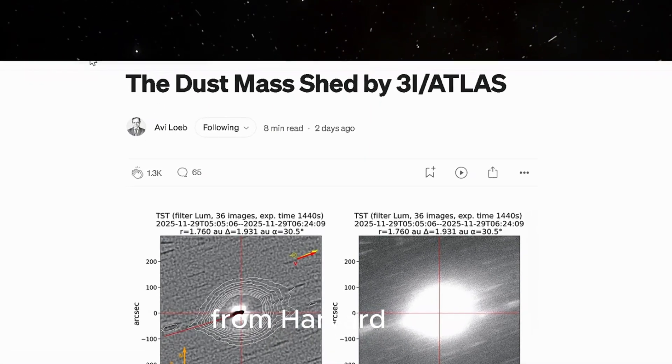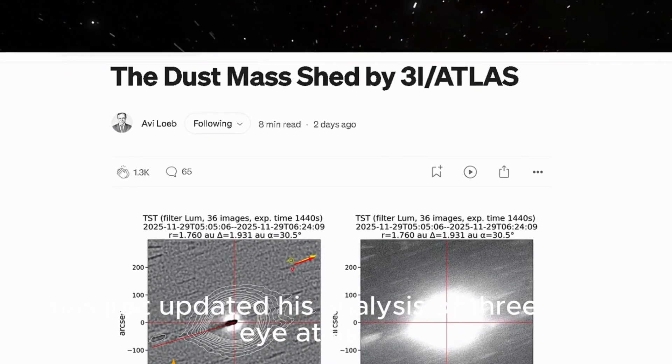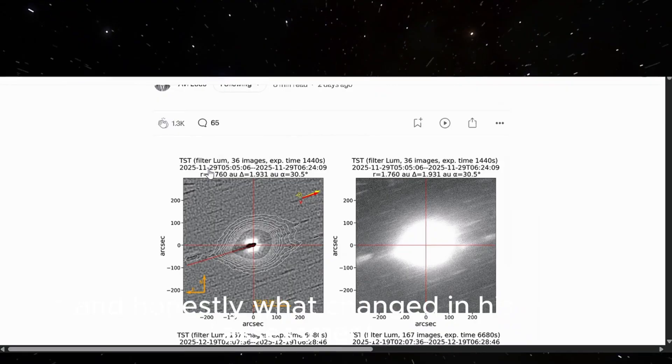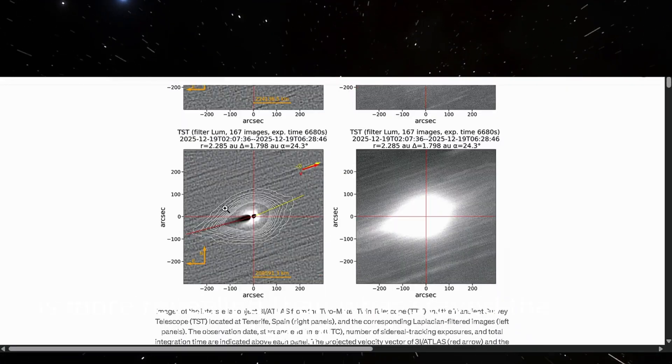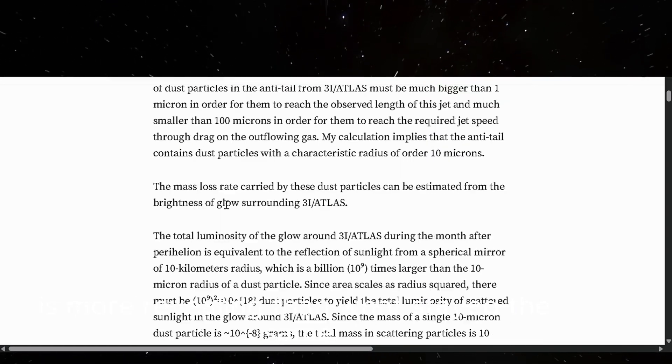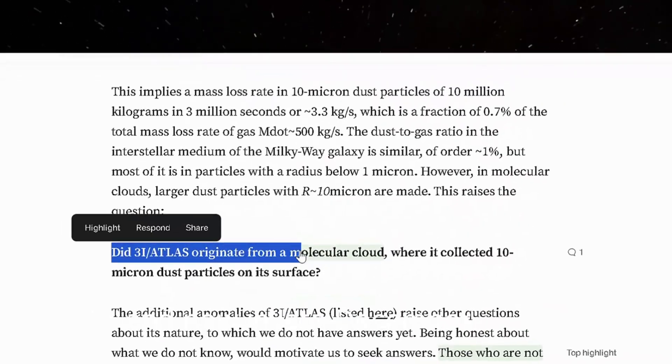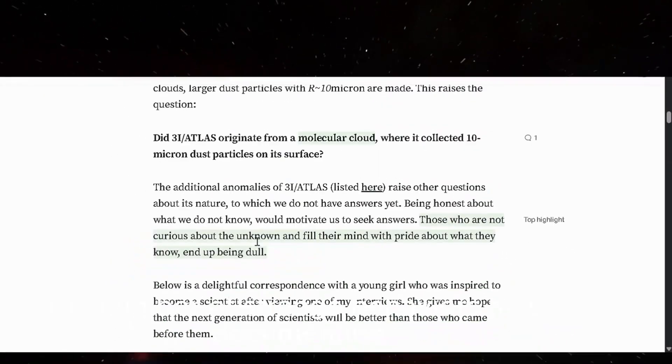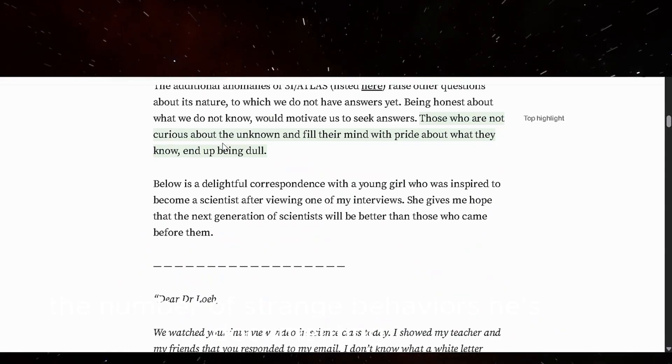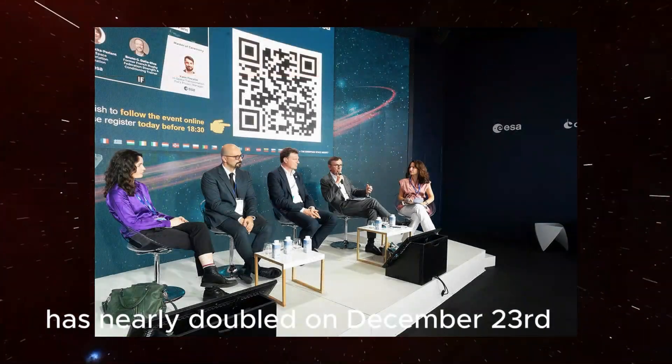So, Dr. Avi Loeb from Harvard has just updated his analysis of 3i Atlas. And honestly, what changed in his assessment is more revealing than what stayed the same. Because between October 29th, when he first flagged anomalies, and now, in late December, the number of strange behaviors he's documenting has nearly doubled.